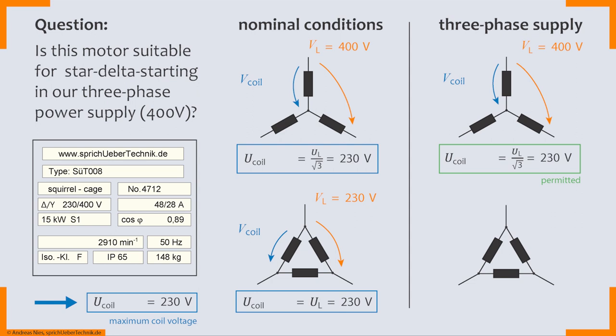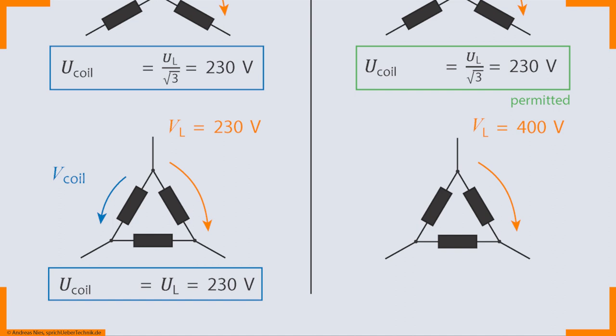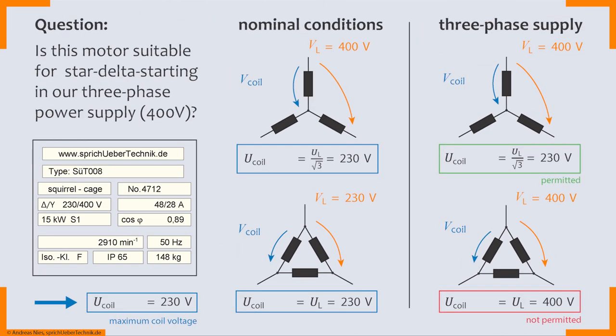But how about delta connection? Well, in delta connection we'd of course still have 400 volts face-to-face. And therefore the coil voltage would be just the same. It would just be 400 volts. And would this be okay? If you listened carefully until now you might know the solution already. No, of course it's not permitted. As you can see here on the left hand side the maximum coil voltage is 230 volts. So that's not going to work. And thus we cannot apply the star delta starting either. Which is the correct answer to the original question?